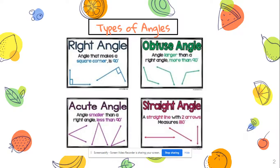Next we have an acute angle. Think of it like a cute little angle — these are smaller than 90 degrees. Then we have obtuse angles — these are any angles larger than a right angle but smaller than a straight line, so anywhere from 90.00001 up to 179.999 degrees. It can't be exactly 90 or exactly 180; it has to be in between.